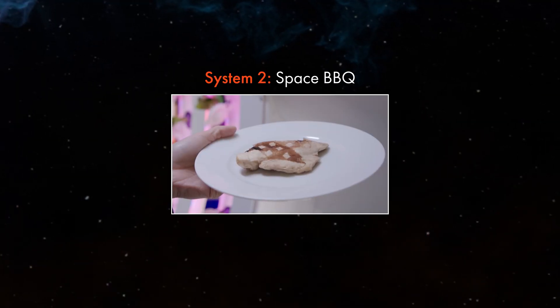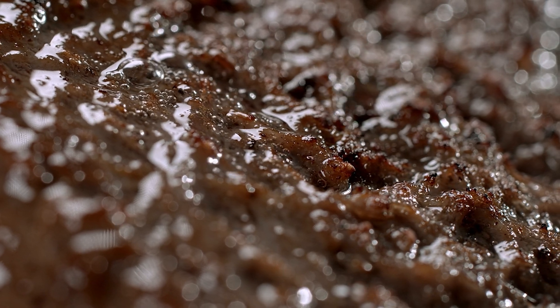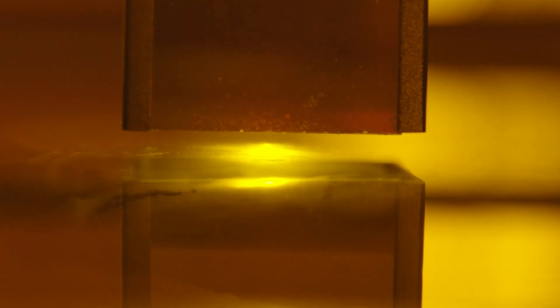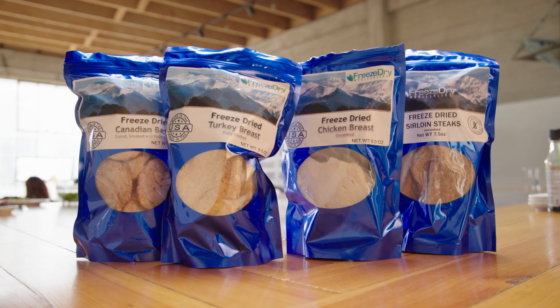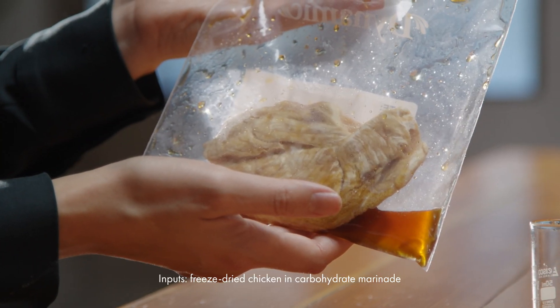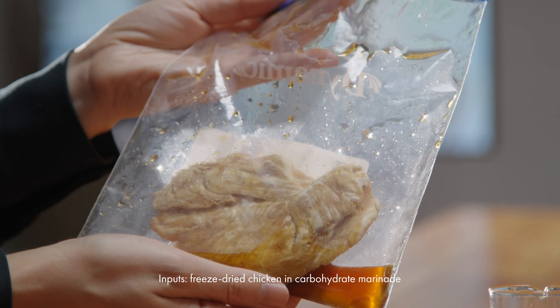System 2, space barbecue. To make protein look and smell like it came off the barbecue, we can apply laser grill marks to its surface. First, rehydrate a piece of freeze-dried chicken in a carbohydrate marinade. We tested maple syrup and it was shown to be pretty effective at helping the process of caramelization.